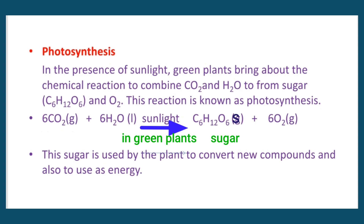In the photosynthesis equation, we use CO2 gas plus H2O liquid, with sunlight in green plants, to produce C6H12O6 solid and oxygen gas.